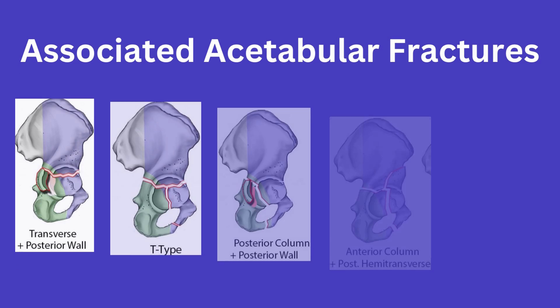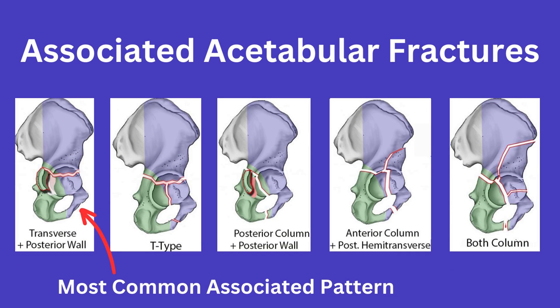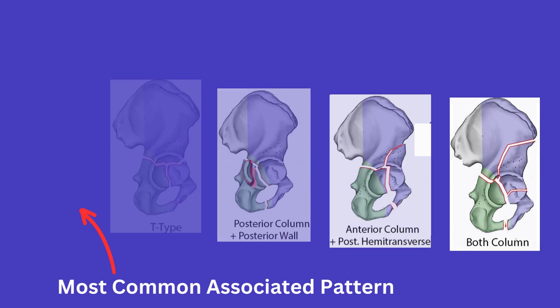The 5 associated patterns are transverse with posterior wall, which is the most common associated type, T-type, posterior wall, posterior column, anterior column with posterior hemi-transverse, and both column, which you can appreciate here.